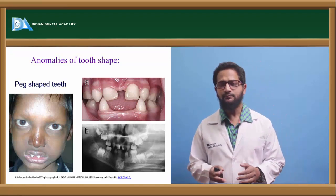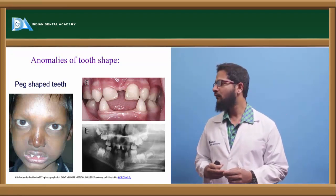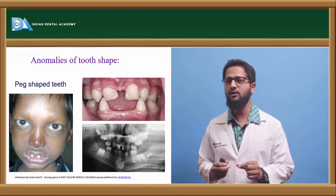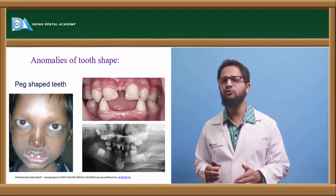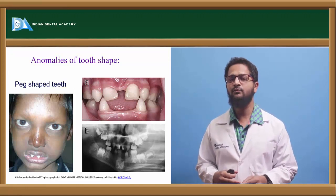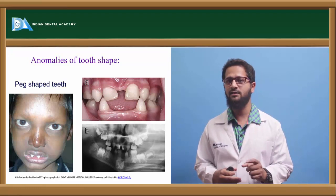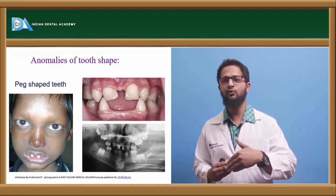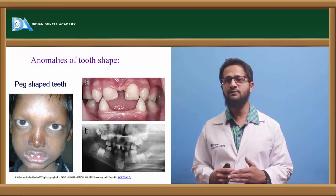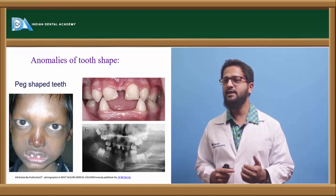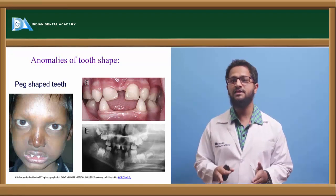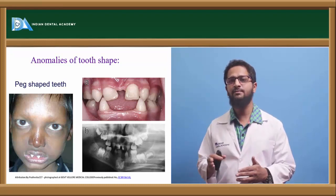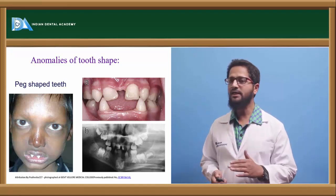Next, anomalies of tooth shape. One of the most commonly seen conditions is peg-shaped laterals, where the lateral incisor is very small in the form of a peg, often associated with certain syndromes. Some patients have an abnormally large cingulum on the palatal aspect of the upper incisor, which prevents proper closure of the arches and does not allow proper overjet and overbite. An additional abnormal cusp may be present in mandibular second premolars. Congenital syphilis causes Hutchinson's incisors and mulberry molars. Dilaceration is a sharp bend between the crown and root portion of a tooth.